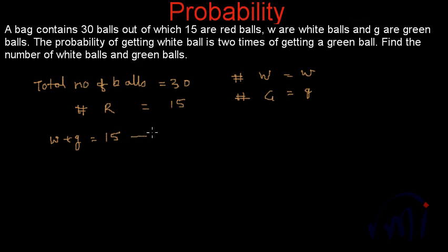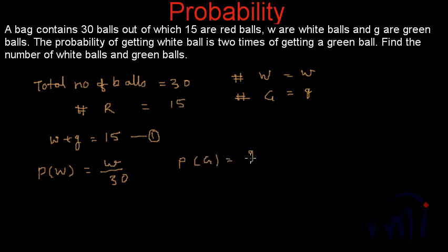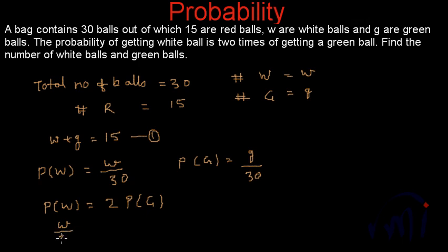Since we have 30 total balls and 15 are red, the number of white and green balls together is w + g = 30 − 15 = 15. Let us call this equation number one. Next, they say the probability of getting a white ball is 2 times the probability of getting a green ball. So P(w) = w/30 and P(w) = 2 × P(g).